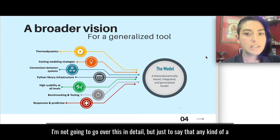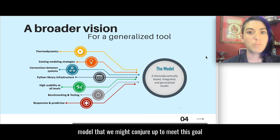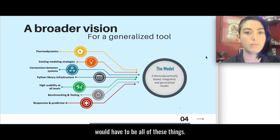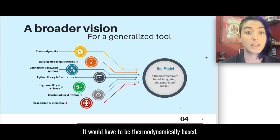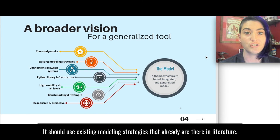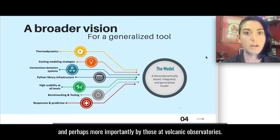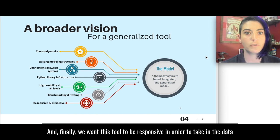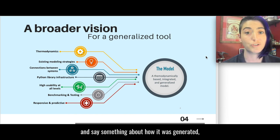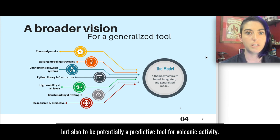I'm not going to go over this in detail but just to say that any kind of model that we might conjure up to meet this goal would have to be all of these things. It would have to be thermodynamically based. It should use existing modeling strategies that already are there in the literature. It should facilitate the usability of this tool at all skill levels including and perhaps more importantly by those at volcanic observatories. And finally we want this tool to be responsive in order to take in the data and say something about how it was generated but also to be potentially a predictive tool for volcanic activity.